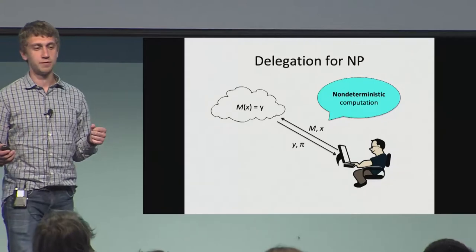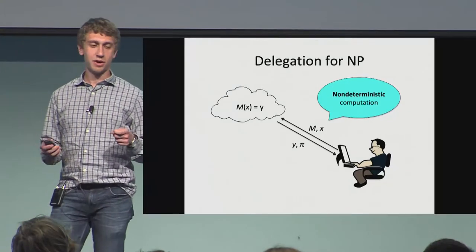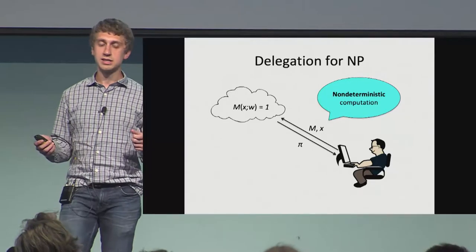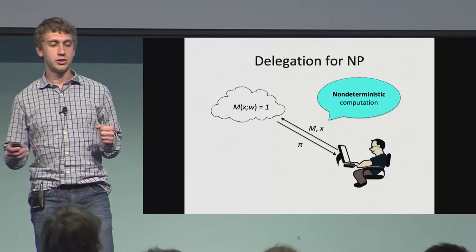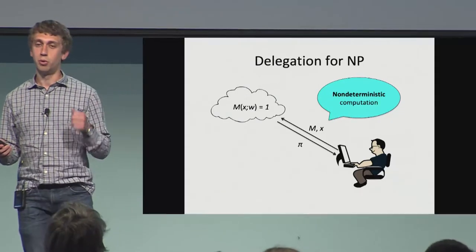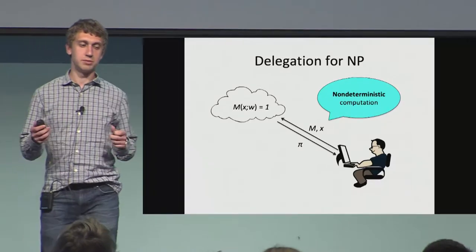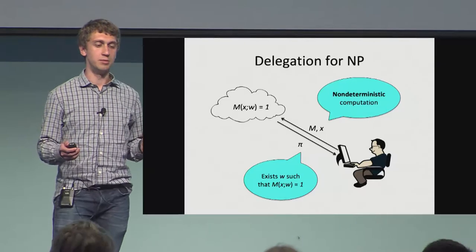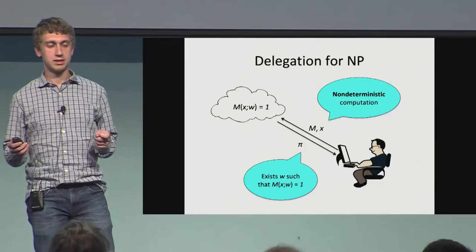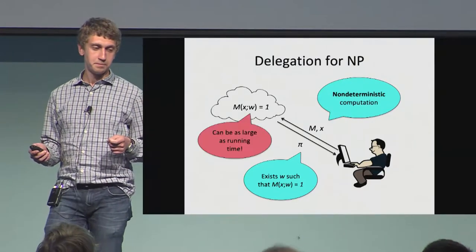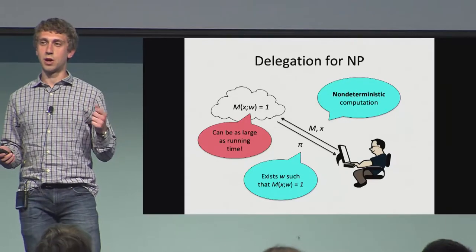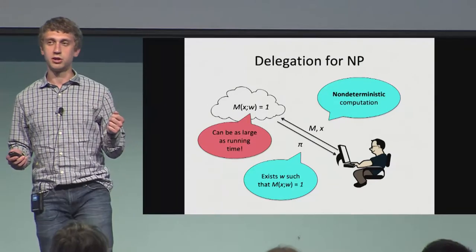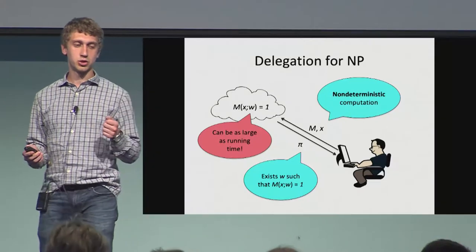You can ask the same question for NP as well. Here you have some non-deterministic computation, and maybe we want to know: does there exist some witness that causes the verification circuit for the language to output one? In the same setting, you want a proof that's much more efficient, saying that there exists some witness causing the machine to accept. Here the witness can be as large as the running time of the machine, since each step could make a different non-deterministic choice.